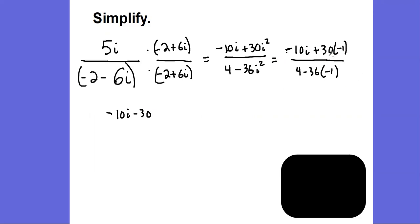30 times negative 1 would be negative 30. And 36 times negative 1 would be negative 36. Subtracting negative 36 would be adding 36. So this is 4 plus 36, and 4 plus 36 would just be 40.